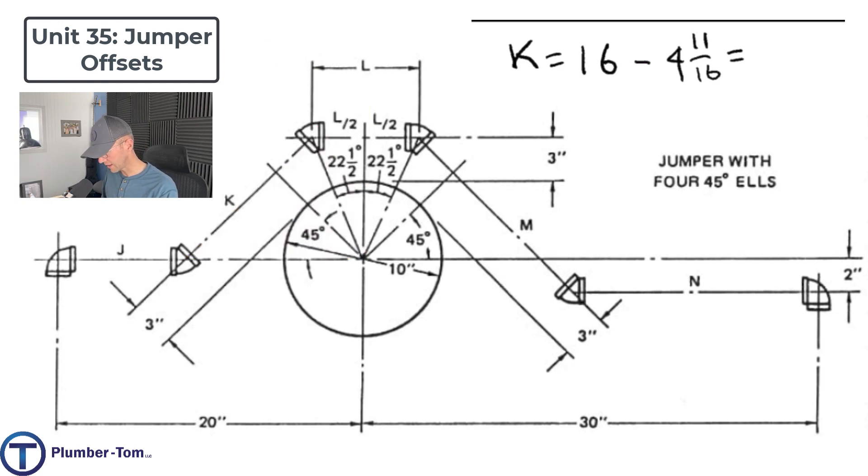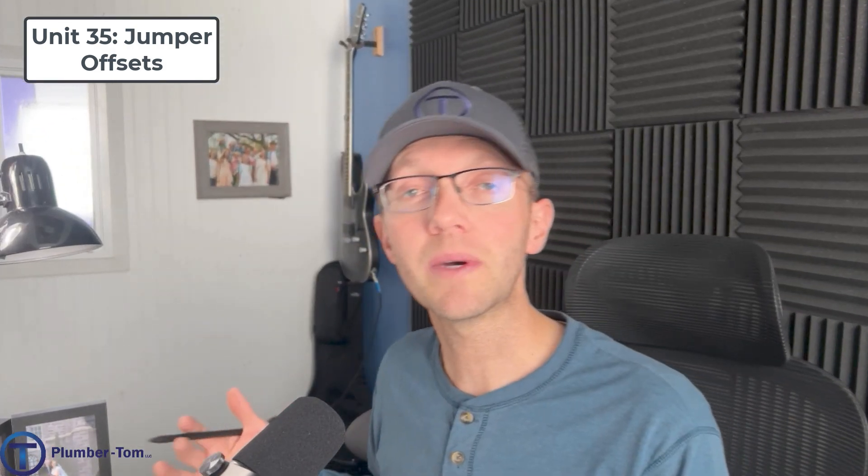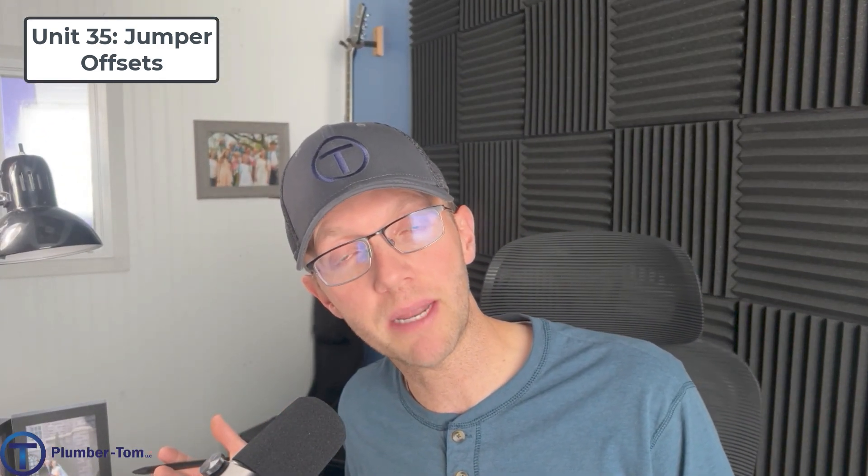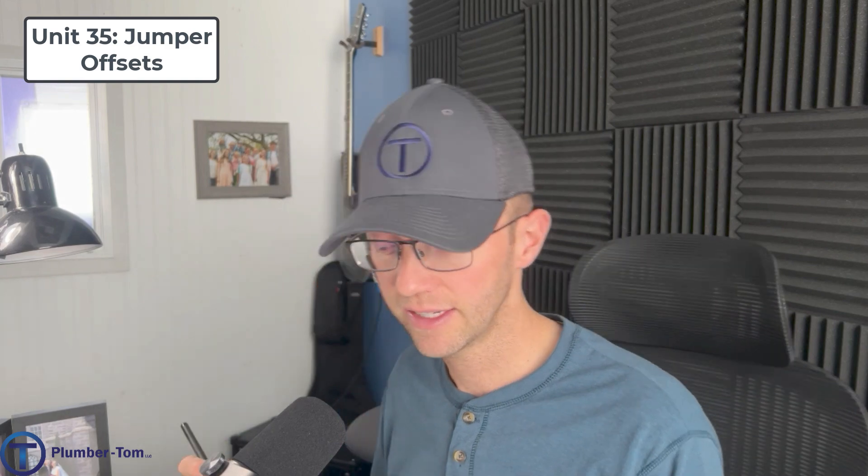So when we do that math, 16 minus 4 is 12 minus 11 sixteenths. That's going to leave us with 5 sixteenths. Now if you look closely in the book on K where they solved it, they accidentally typed that out to be 9 sixteenths. But up in the answer key, they do have it as 5 sixteenths. Once again, please excuse the editing errors in the mathematics for plumbers and pipe fitters. Oh boy.